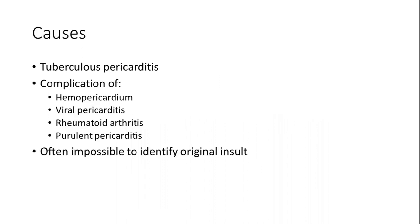The causes include viral infections, non-inflammatory causes, inflammatory causes such as rheumatoid arthritis, and in our part of the world tuberculous pericarditis is a very important cause of chronic constrictive pericarditis. However, in many cases it is very difficult to identify the original cause.